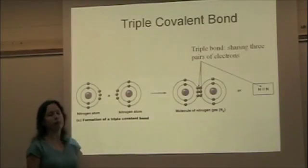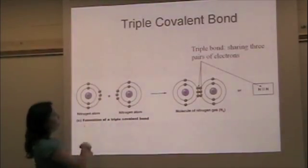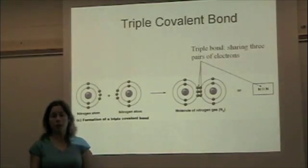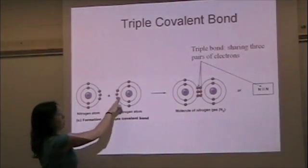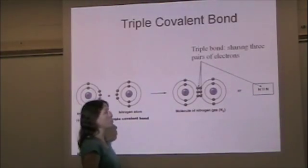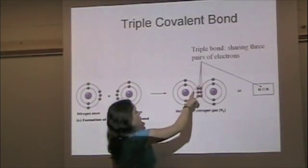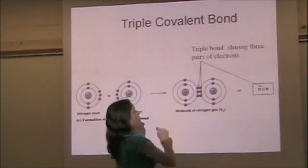Nitrogen gas is a great example of a triple covalent bond. Nitrogen has five electrons in its outer shell and would like to have eight for a full outer shell. So it's going to share six that will spend some time rotating around each individual atom: six shared and then two for a total of eight.